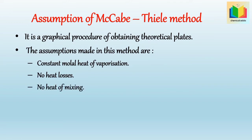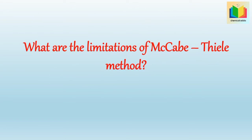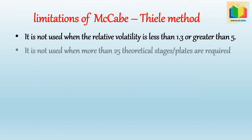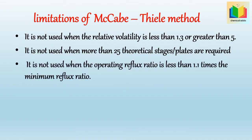What are the limitations of the McCabe-Thiele method? The limitations are: it is not used when the relative volatility is less than 1.3 or greater than 5; it is not used when more than 25 theoretical stages or plates are required; and it is not used when the operating reflux ratio is less than 1.1 times the minimum reflux ratio.